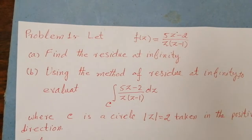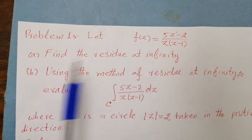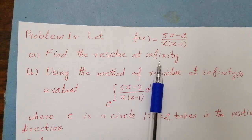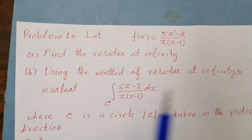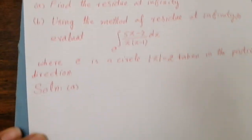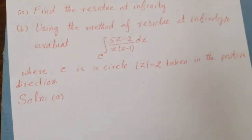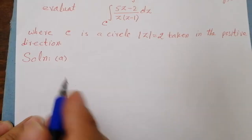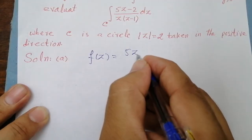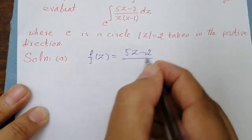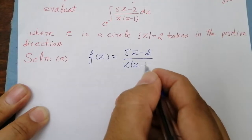Now let us solve an example to explain this result. We have the function f(z) = (5z − 2) / (z(z − 1)). Part one: find the residue at infinity. Part two: use the method of residue at infinity to evaluate the integral along the curve c.